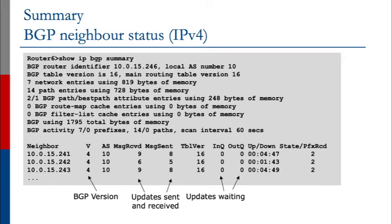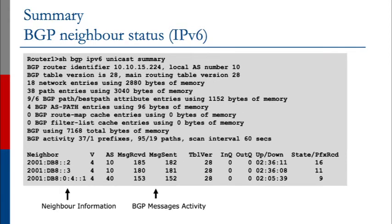The screen in front of you shows the IPv4 version of this. For IPv6, the display is actually very similar. Again, we have a list of the neighbors — this time the IPv6 addresses — as well as BGP version number, AS number, and all the different messages and the number of prefixes received.